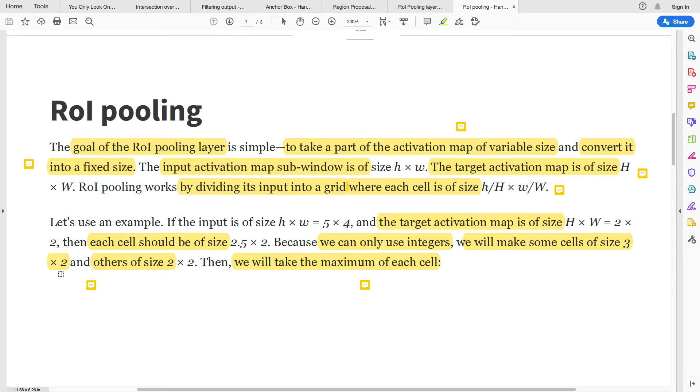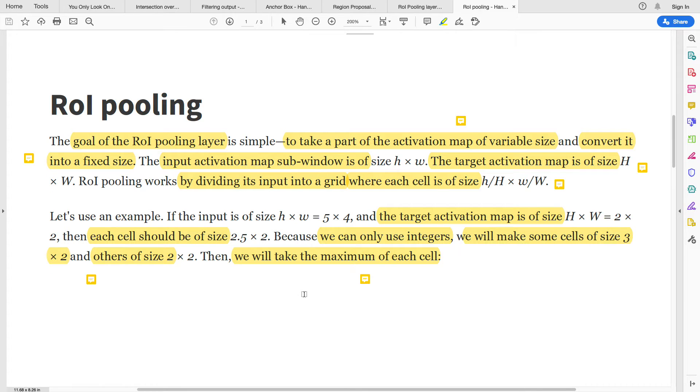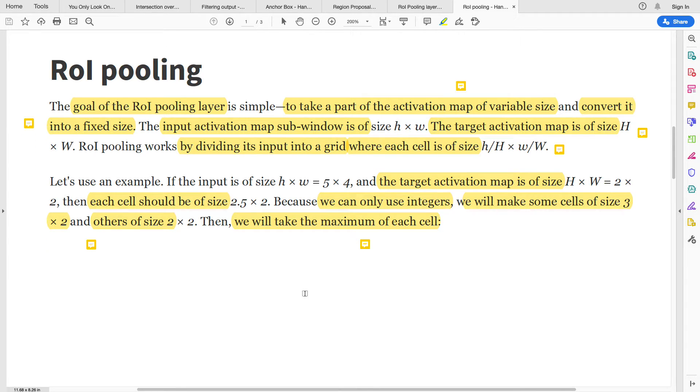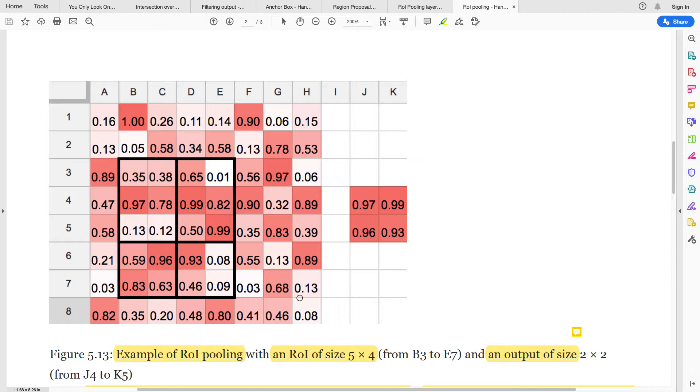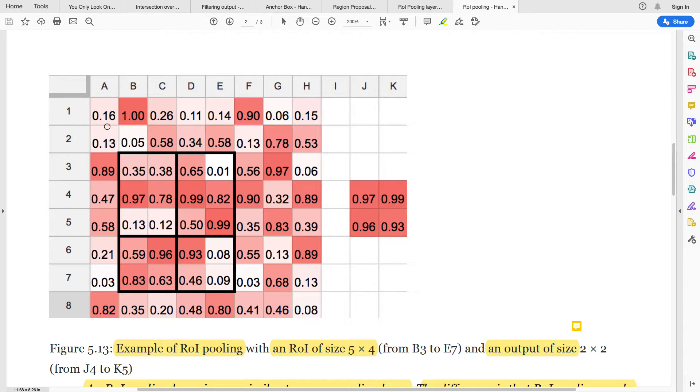So we have 3 and 2, so some of the cells will now have 3 by 2 size, others will have 2 by 2. Then just like we do max pooling, we take the maximum of each cell. Let's see it in a diagram.